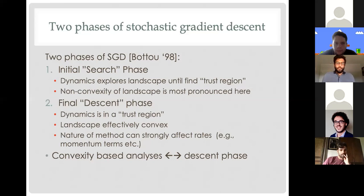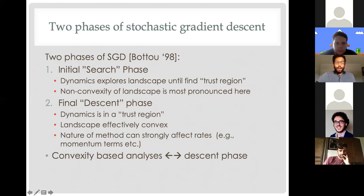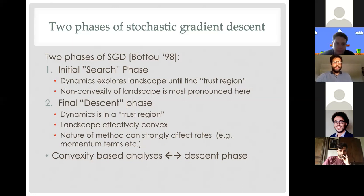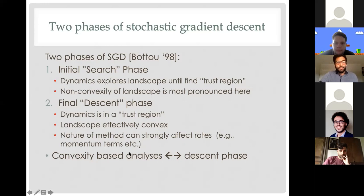Typically people feel there are two phases in stochastic gradient descent. There's an initial search phase where the dynamics — the algorithm is wandering around in a highly non-convex landscape. Then hopefully after a certain amount of time you've entered an effective trust region and the algorithm enters the descent phase, where you can treat the landscape as effectively convex and start winning off momentum terms. One thing I want to get at is that convexity-based analyses naturally lend themselves to understanding the descent phase, but in many problems we're interested in, during the initial search phase this non-convexity can be really pronounced.